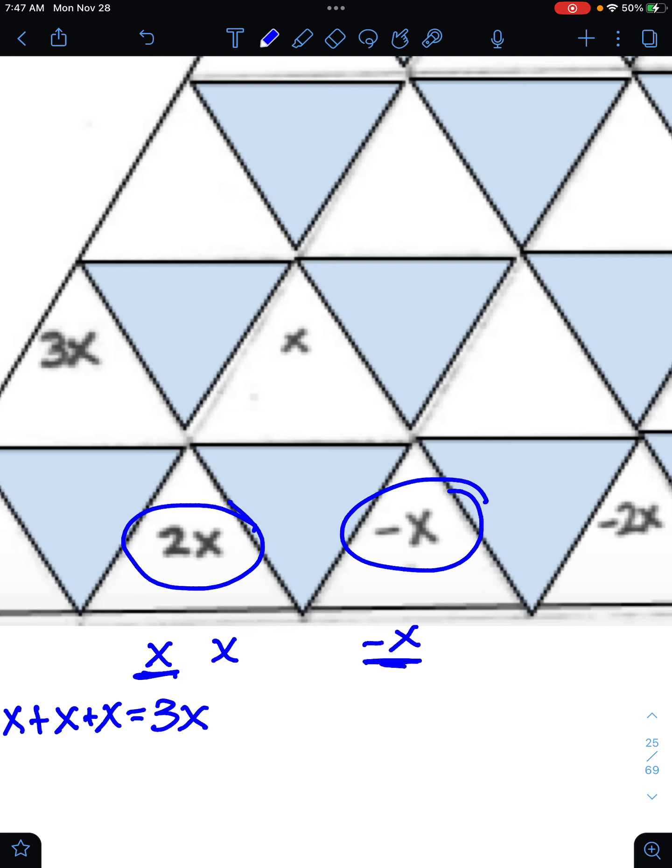You could also think about it as regular 2 plus negative 1. That matches up with the 2x plus negative 1x. Negative x is just the same thing as negative 1x. So you're really just concerned about the coefficient in the front. 2 plus negative 1 is positive 1. Therefore, the answer is positive 1x. But we just write x. We don't write the 1.